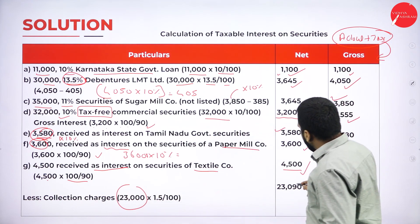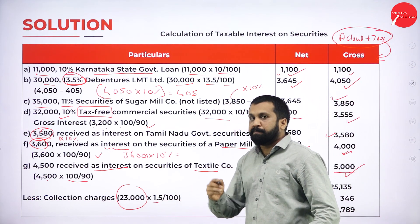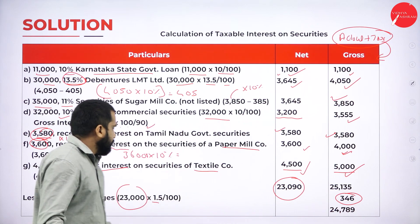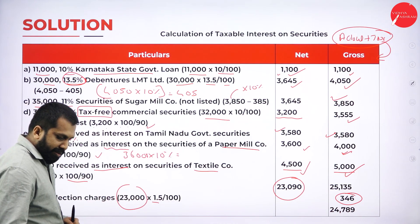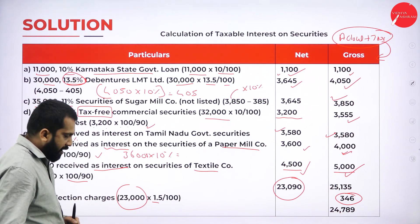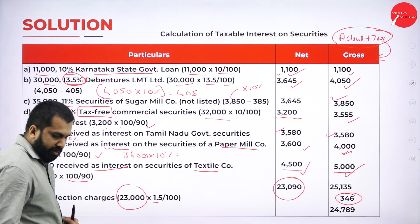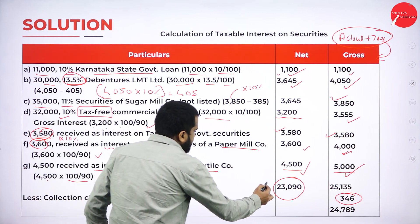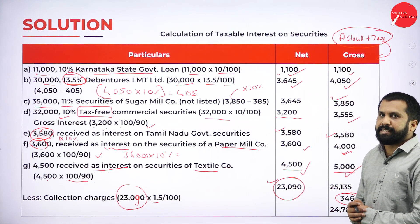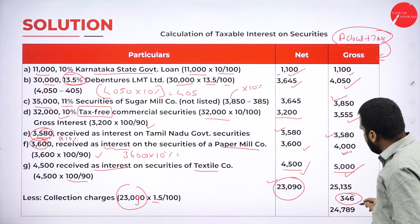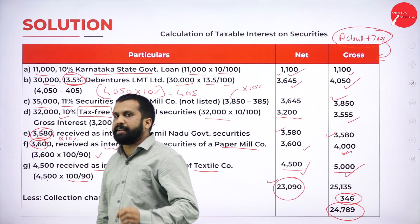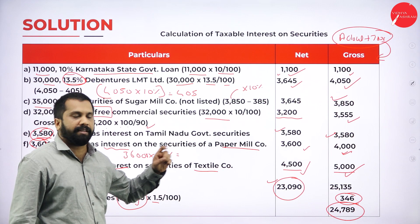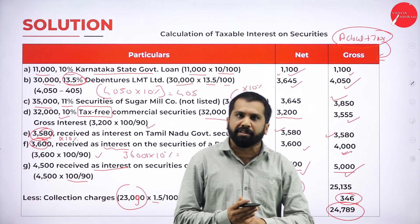For collection charges: take your net total of 23,090 and apply 1.5% commission. 23,090 × 1.5/100 = approximately 346. So collection charges = 346. Subtracting: 25,135 − 346 = 24,789. So the net income from interest after collection charges is rupees 24,789.